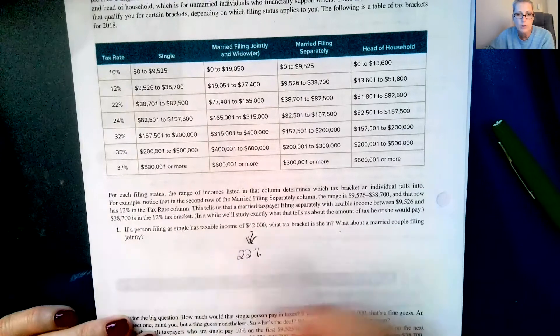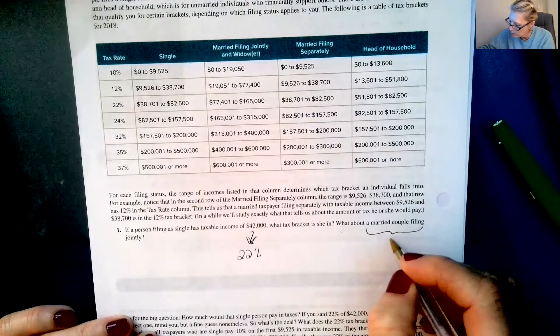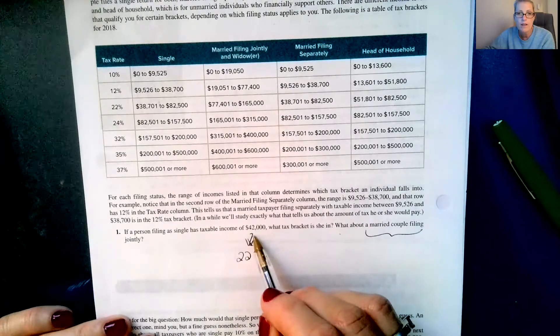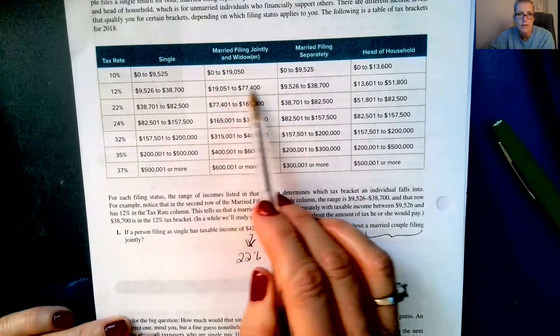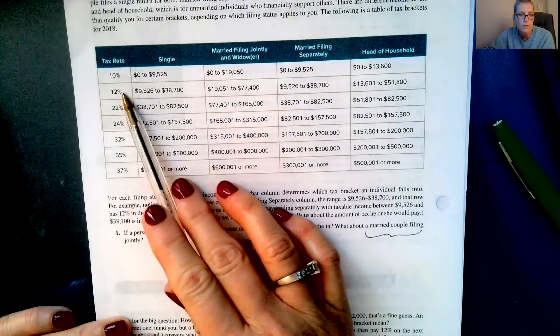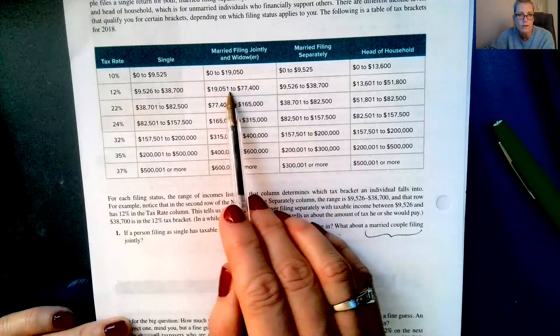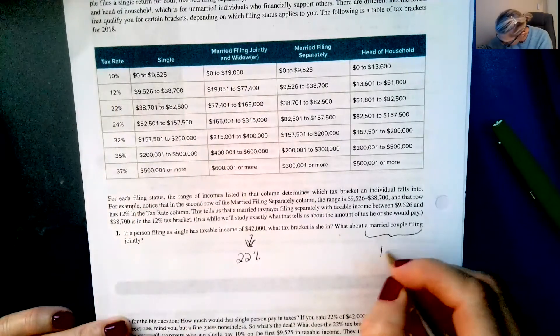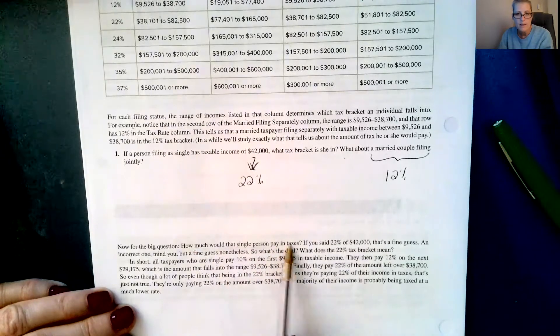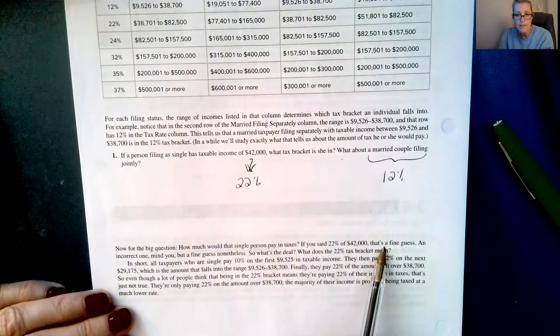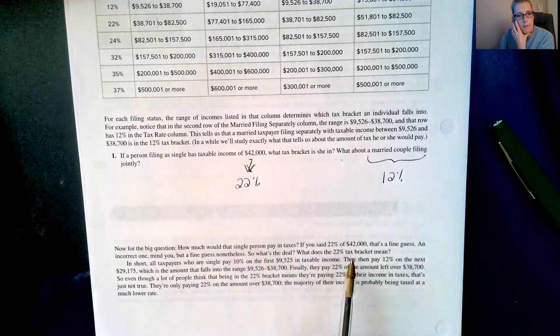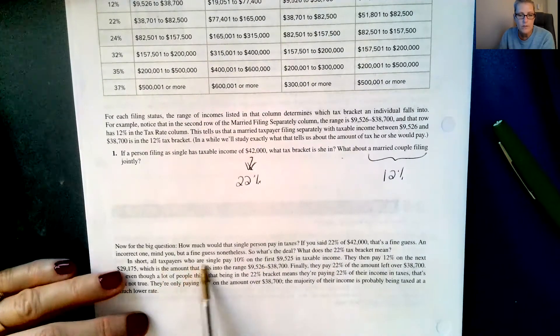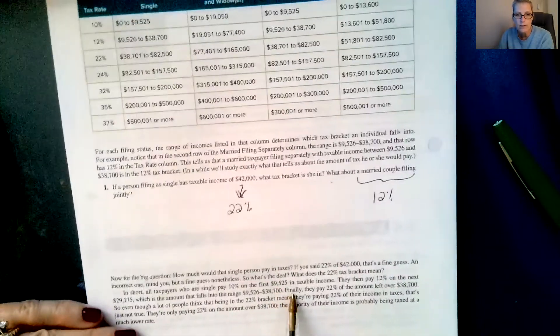What about a married couple filing jointly? So if it's a married couple filing jointly and they make $42,000, then they're in this bracket right here, they're in this category right here. So they would fall into the 12%. So married filing jointly making $42,000 is in the 12% bracket. Okay, so now for the big question: how much would that single person pay in taxes? If you said 22% of $42,000, that's a fine guess and incorrect one, mind you, but a fine guess nonetheless. So what's the deal? What does the 22% tax bracket mean?